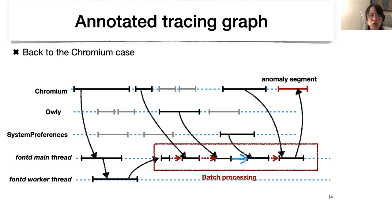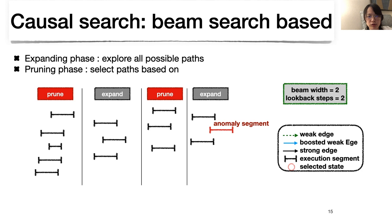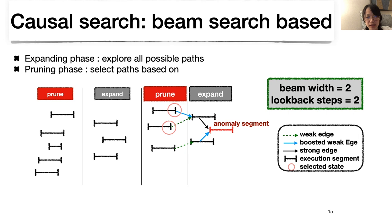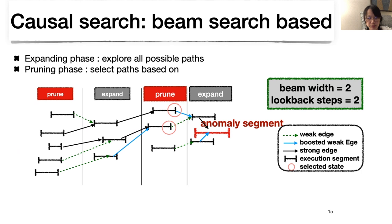An inaccuracy-tolerant diagnosis algorithm is still needed to find the causal path of performance anomalies. We designed the beam search-based diagnosis algorithm in Argus debugger. The algorithm operates in two phases: an expanding phase where Argus explores all possible paths, and a pruning phase where it selects the most likely causal path based on edge annotations—generally preferring strong edges over weak edges. The beam width controls how many causal paths Argus returns, and the lookback step sets how many steps a path explores in each expanding phase. In the Chromium example, it begins from the anomaly segment, searches backward, expands paths in a tree structure, selects the most possible paths, and repeats until reaching a user input event or a dead end.